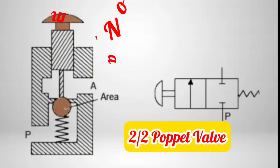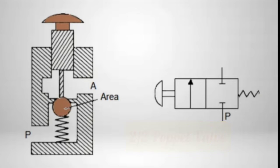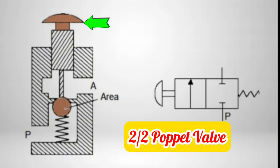Symbol of a simple 2-way normally closed valve. The release of the push button lifts the ball off its seat and allows fluid to flow from port P to port A.